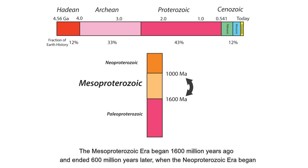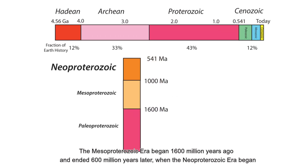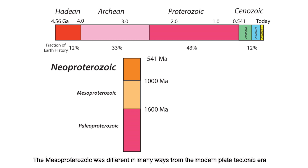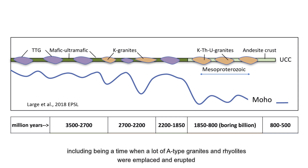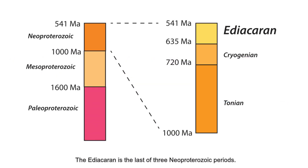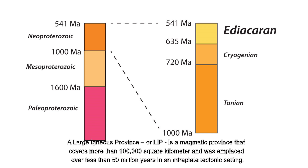The Mesoproterozoic era began 1,600 million years ago and ended 600 million years later, when the Neoproterozoic era began. The Mesoproterozoic was different in many ways from the modern plate tectonic era, including being a time when a lot of A-type granites and rhyolites were emplaced and erupted. The Ediacaran is the last of three Neoproterozoic periods.